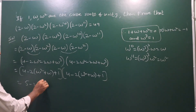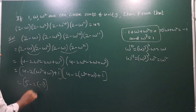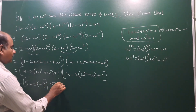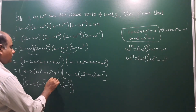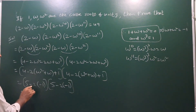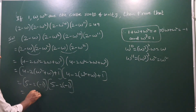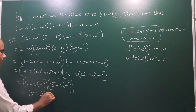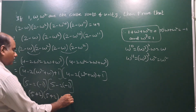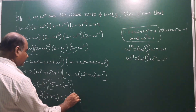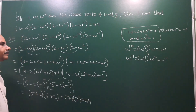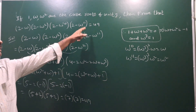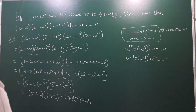Substituting ω + ω² = -1, the first bracket becomes 5 - 2(-1) = 5 + 2 = 7. Similarly, the second bracket is also the same: 5 + 2 = 7. So 7 × 7 = 49, which is our RHS. That is the answer.